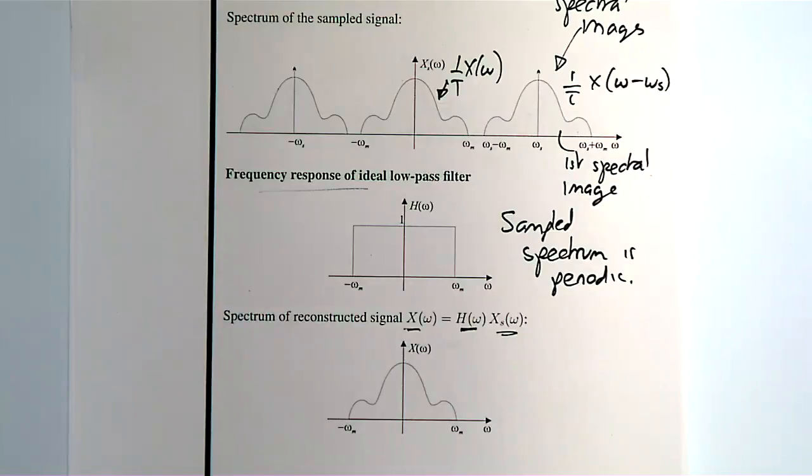So if you take the sampled spectrum and you put it through a low-pass filter, then you just isolate the baseband element.